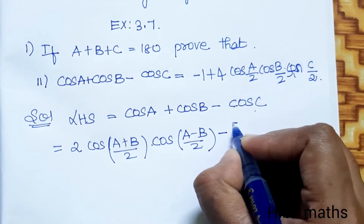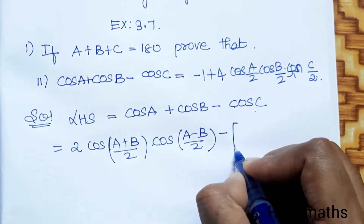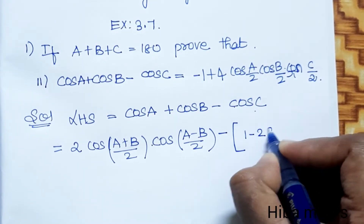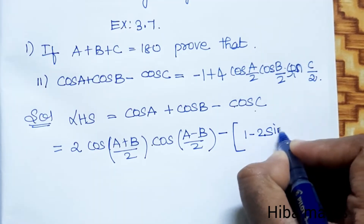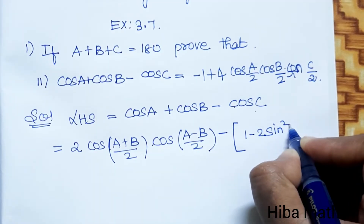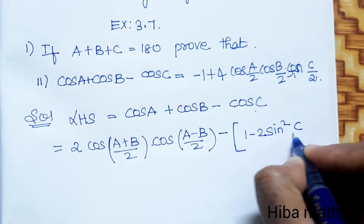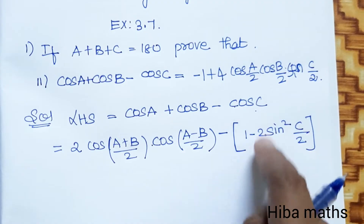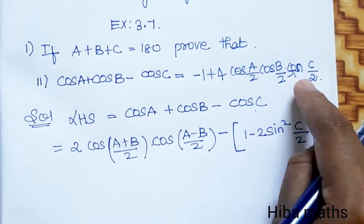For cos C, we apply the identity: cos theta equals 1 minus 2 sin squared(theta/2). So cos C equals 1 minus 2 sin squared(C/2). Now, why do we compare this formula here? Let's see.